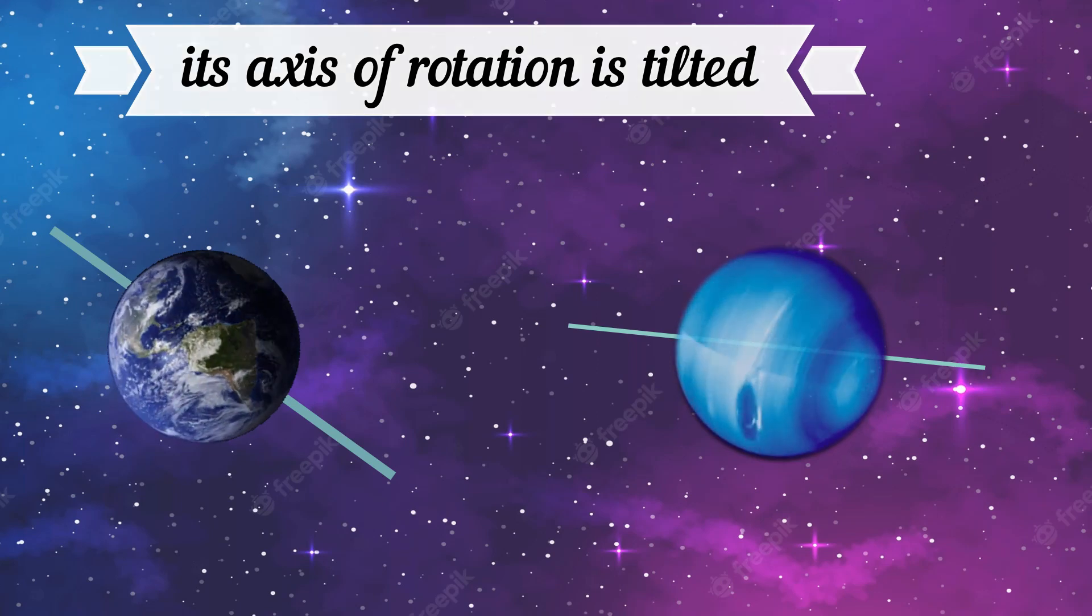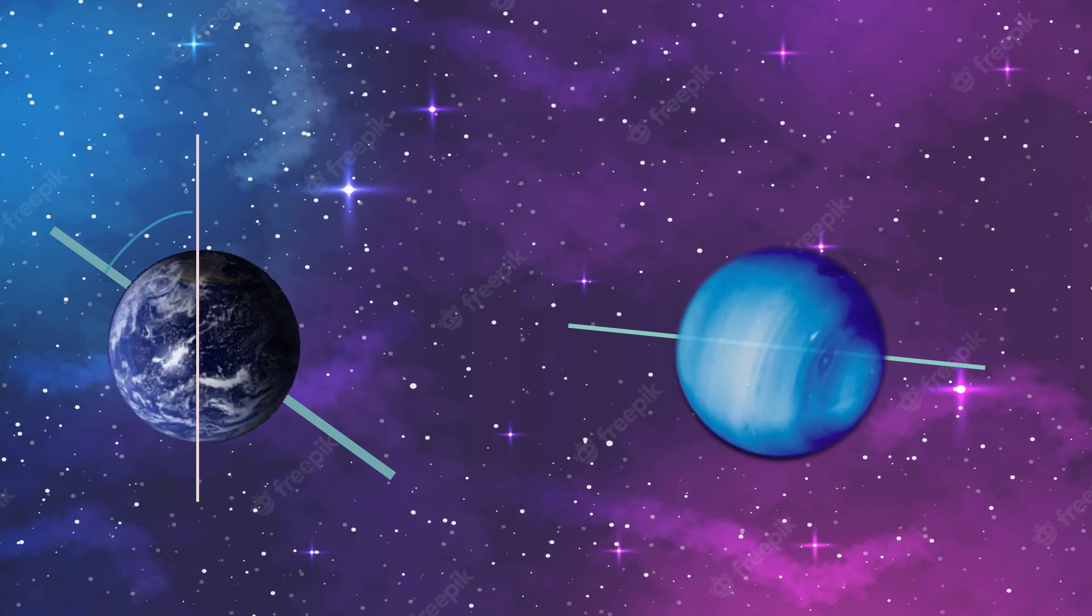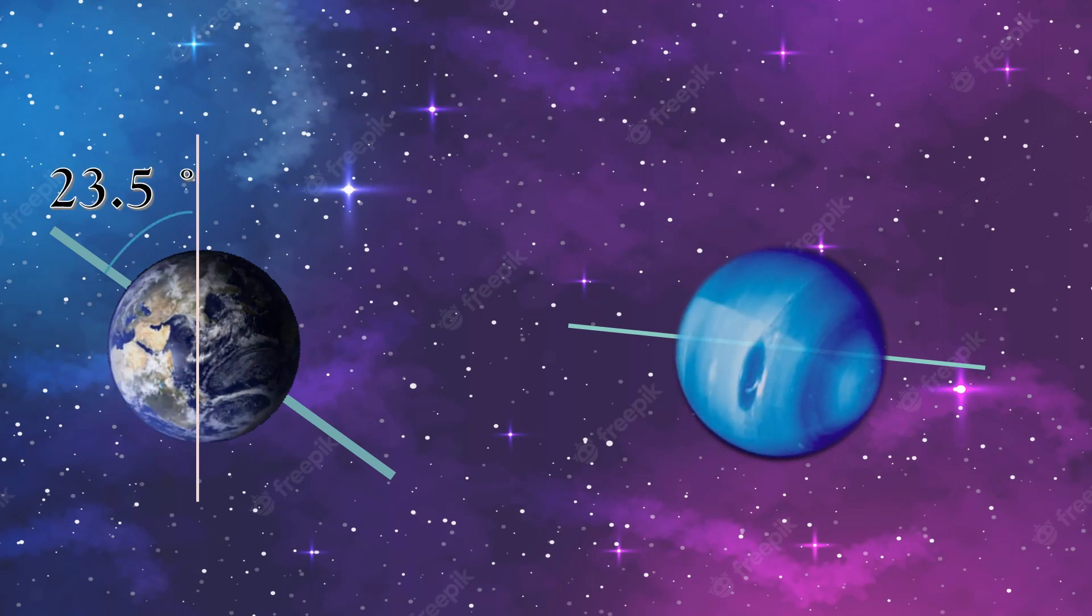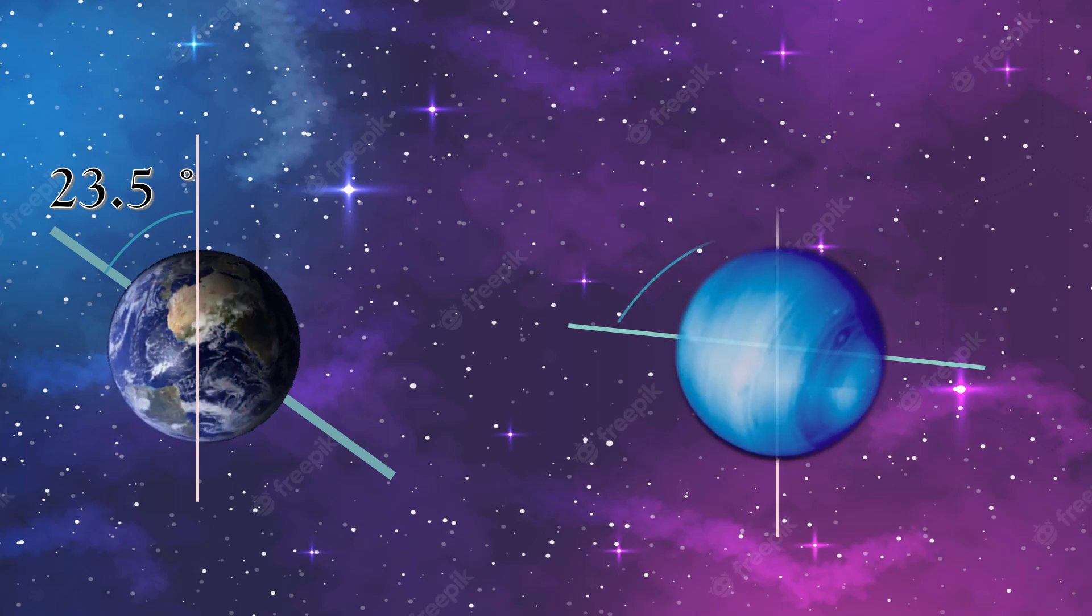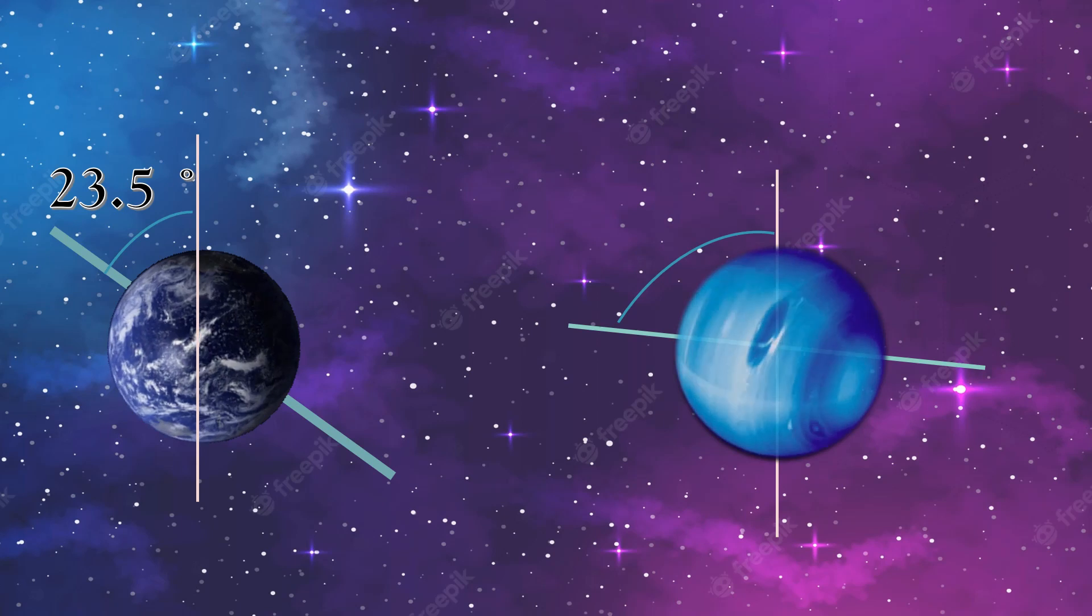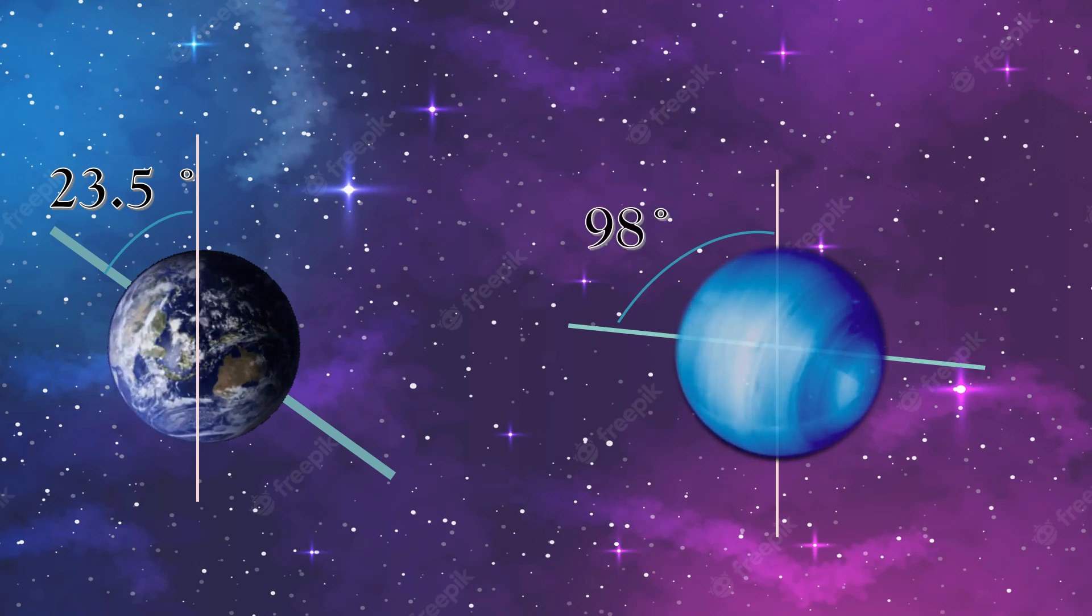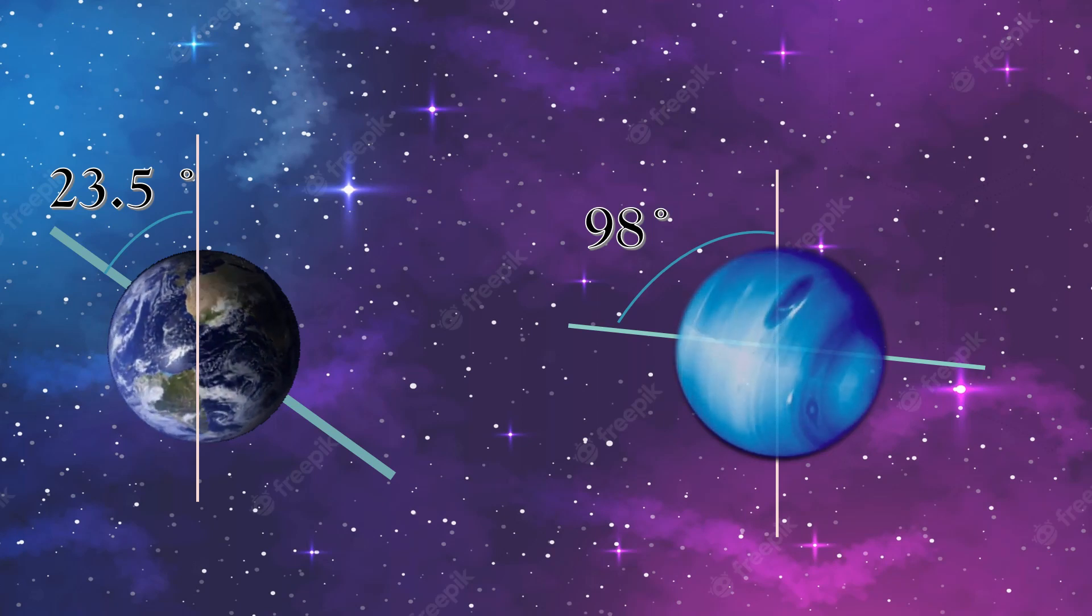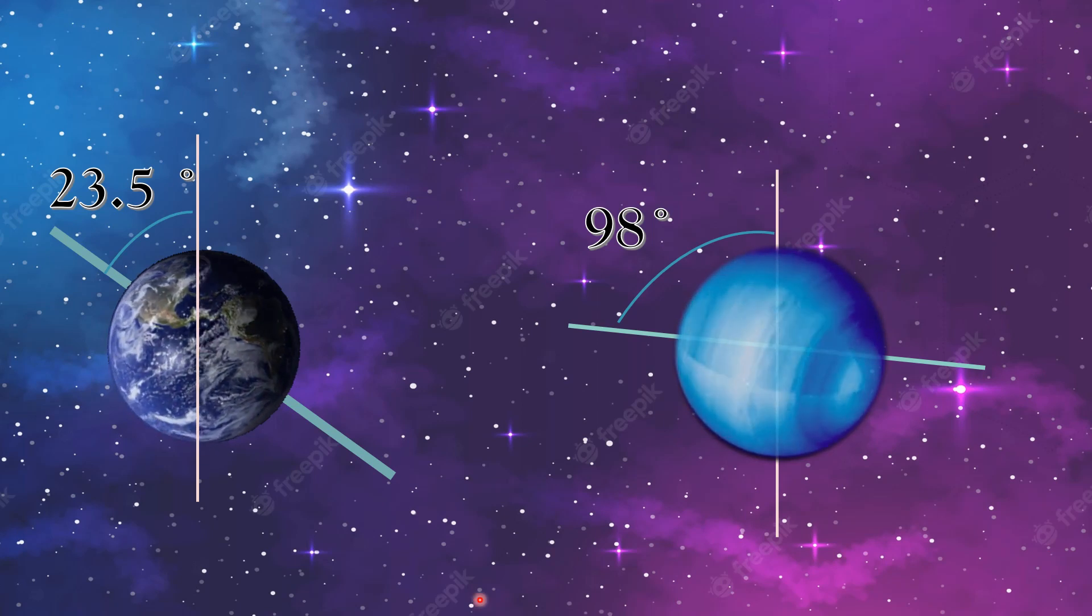Let's compare with Earth. The axis of rotation of Earth is 23.5 degrees, while the axis of rotation of Uranus is 98 degrees. So, the axis of rotation of Uranus is much more tilted.